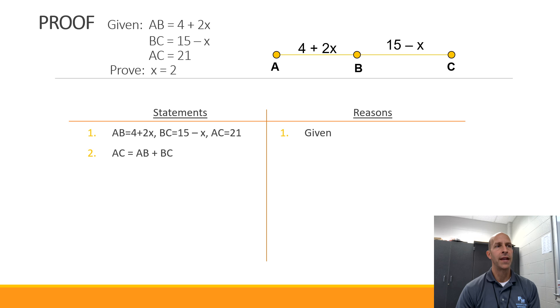Now, the length of AC is equal to the length of AB plus the length of BC, so the entire segment's length is equal to each of its smaller parts added together. That's something called segment addition postulate.